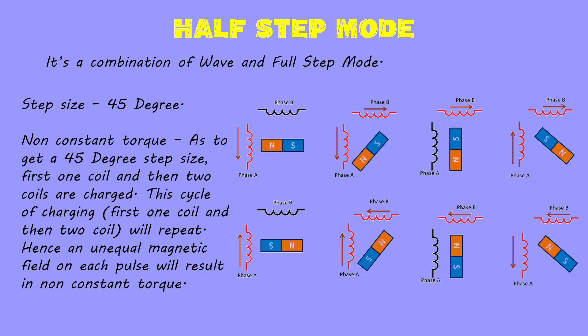Half step mode: it's a combination of wave and full step mode. In both previous modes we got a step size of 90 degrees, but in half step mode we get a step size of 45 degrees. When we charge only coil A, the rotor aligns with coil A. Then when we charge both coils A and B, the rotor moves by 45 degrees, as explained in full step mode. In the third step we charge coil B, resulting in the next 45 degree movement, and so on. The disadvantage of this mode is non-constant torque, as we charge one coil and then two coils alternately, resulting in weak and strong magnetic fields in alternate cycles.